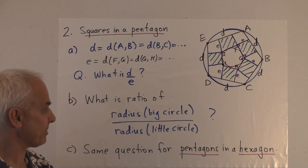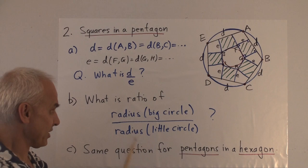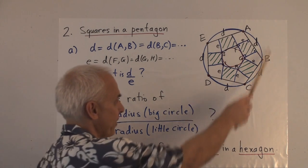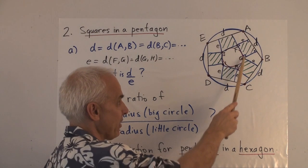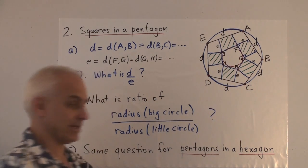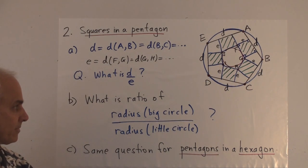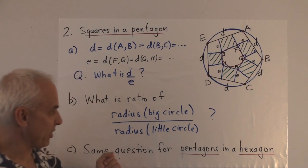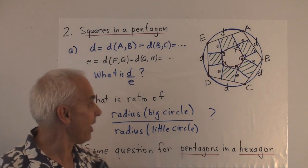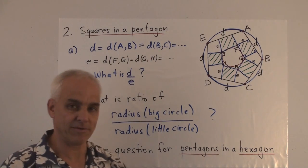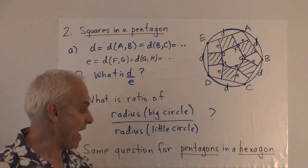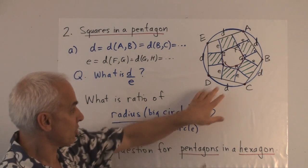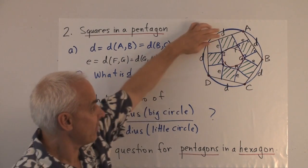So the question is, what is the ratio D to E? And another, perhaps a little bit more complicated problem: what is the ratio of the two radii of the circle? The radius of the big circle divided by the radius of this inscribed littler circle. And if you work that out, then you can also perhaps ask yourself what happens if we replace squares with pentagons and the pentagon with a hexagon.